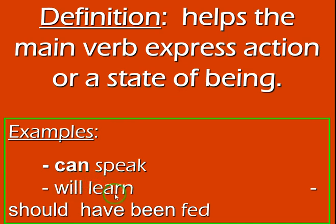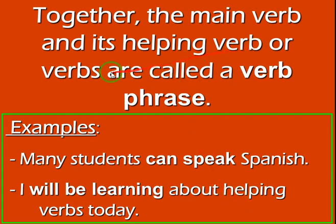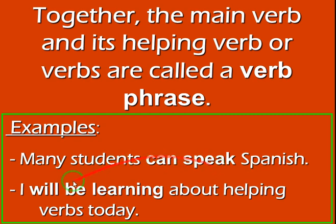In 'will learn,' will is a helping verb that helps the main verb learn. We also have 'should have been' — these three words are all helping verbs that help the main verb. Together, the main verb and its helping verb or verbs are called a verb phrase. For example, in 'many students can speak Spanish,' can speak is a verb phrase.